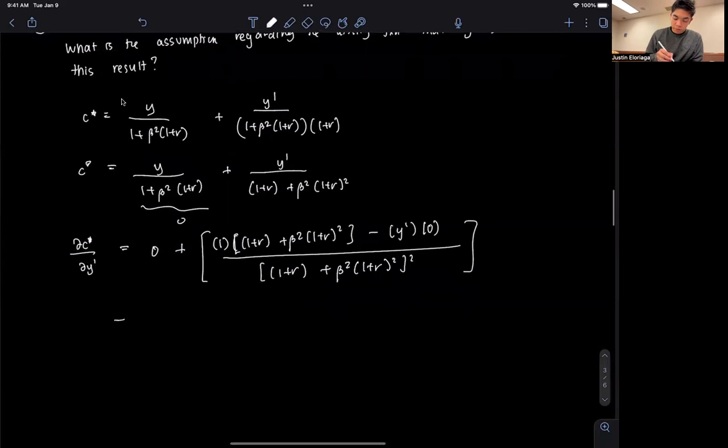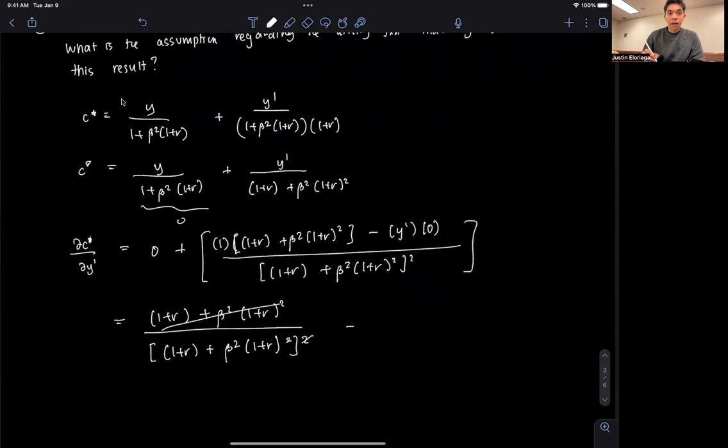So you're left with 1 plus r plus beta squared times 1 plus r squared, divided by that quantity squared. So this will obviously simplify to something a little bit more simple. So this cancels out, and I'm left with 1 over 1 plus r plus beta squared times 1 plus r squared.